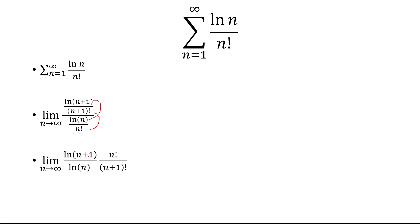So we have natural log of n plus 1 over natural log of n multiplied by n factorial over n plus 1 factorial. Notice n plus 1 factorial is n plus 1 times n factorial, and so the n factorial is going to cancel. So we're left with n plus 1 in the denominator.